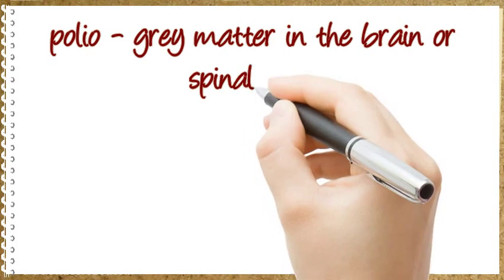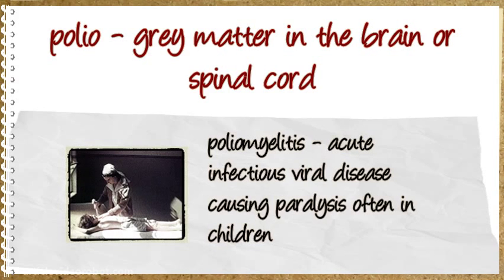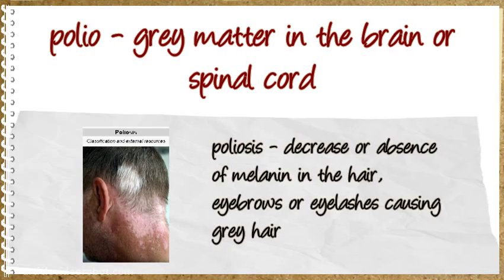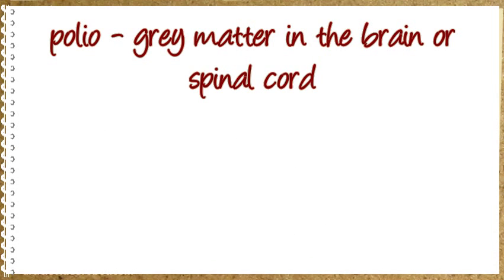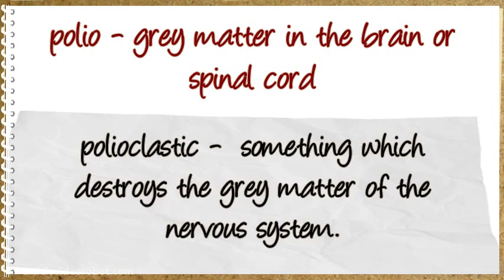Polio means grey matter in the brain or spinal cord. Poliomyelitis: acute infectious viral disease causing paralysis, often in children. Poliosis: decrease or absence of melanin in the hair, eyebrows, or eyelashes causing grey hair. Polioclastic: something which destroys the grey matter of the nervous system.